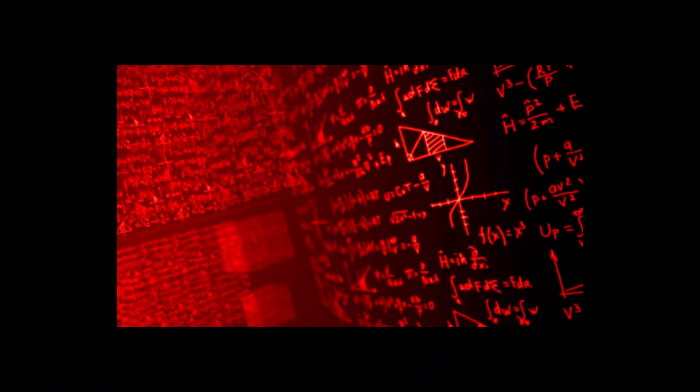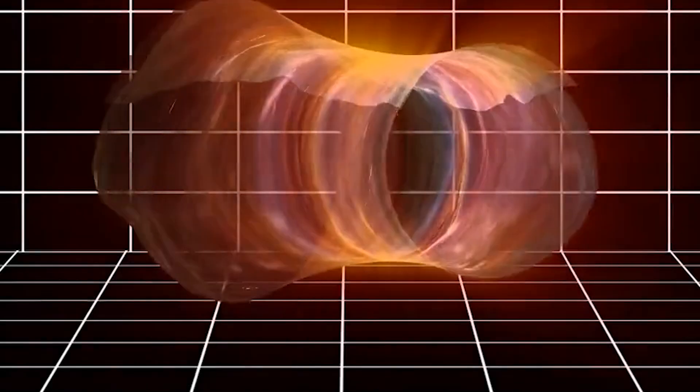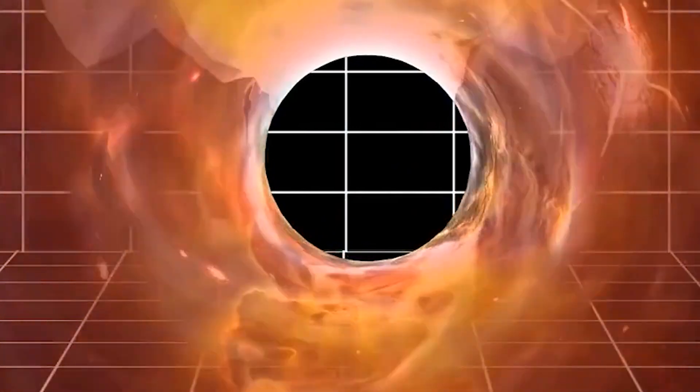He introduced us to the theory of general relativity, which is more like a magic trick than real science. Einstein told us that the universe is not just a space where things happen. No, he went further, saying that this space, which we call space-time, actually bends and curves, and this bending is what we mere mortals feel as gravity.